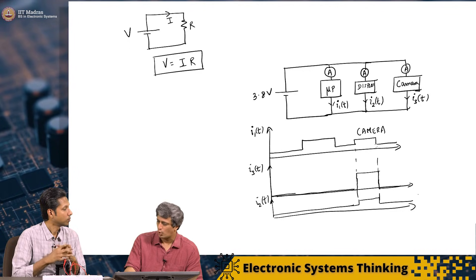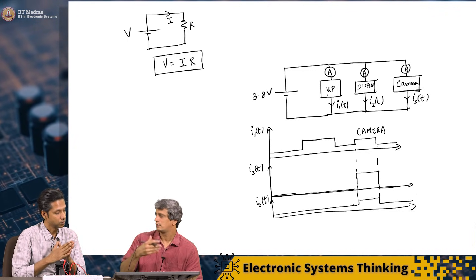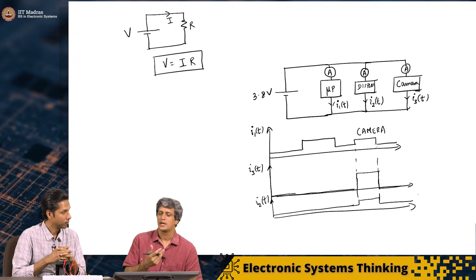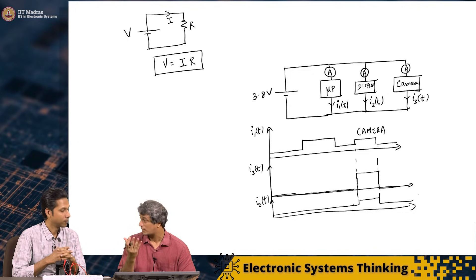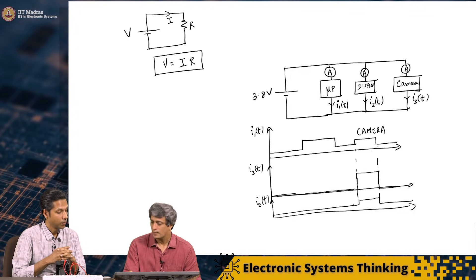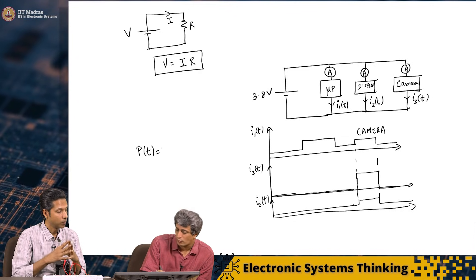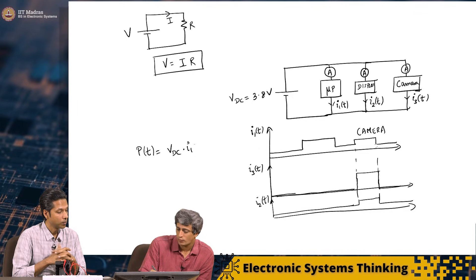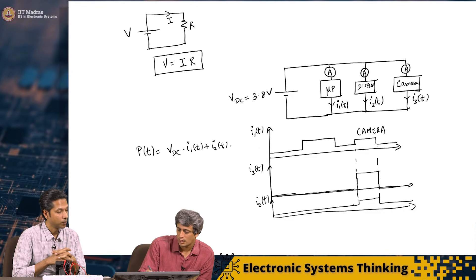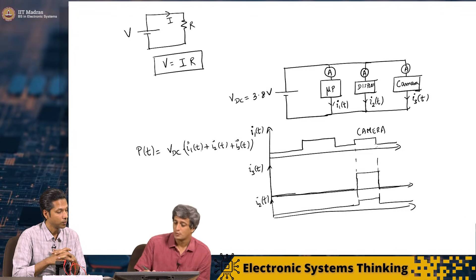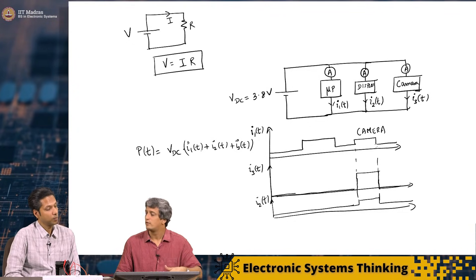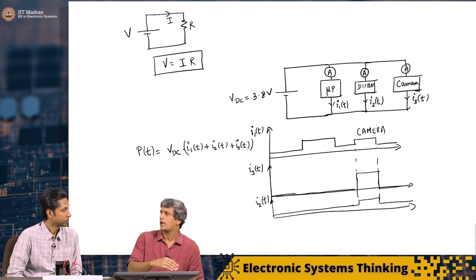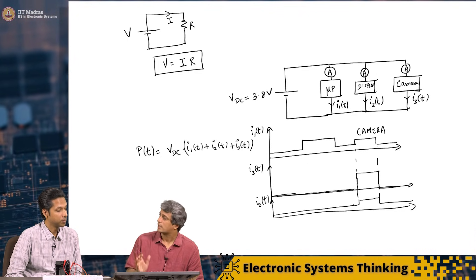So essentially, assuming a certain rating of the battery — we will also look at what the rating of the battery means — it corresponds to a certain amount of charge or energy stored in the battery. With this current profile, you can plot the instantaneous power: Vdc, which is 3.8 volts, multiplied by I1(t) + I2(t) + I3(t). This is the instantaneous power being delivered by the battery as a function of time.